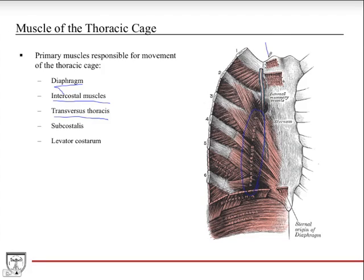This is a posterior view of the sternum. This muscle attaches from the second rib, third rib, fourth rib, fifth rib, and sixth rib all the way onto the sternum — all these different attachment points.